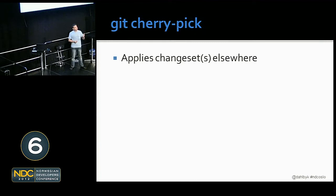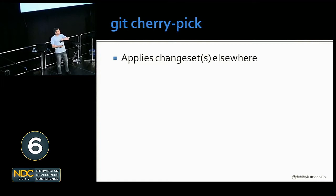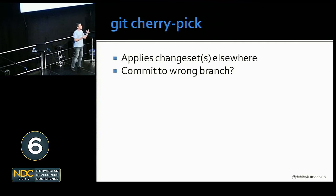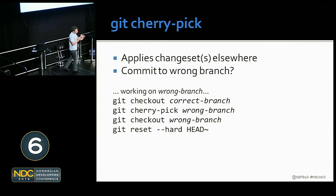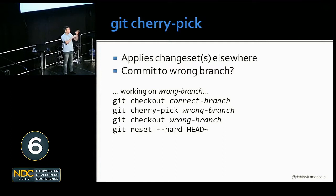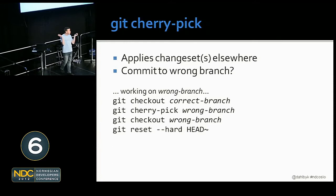Cherry pick — another way to rewrite history. It allows you to apply change sets essentially anywhere. Suppose you committed to the wrong branch. Switch yourself to the correct branch and do a cherry pick of the commit on the wrong branch. If you didn't notice until two commits in, cherry pick `wrong-branch~` and then `wrong-branch` to grab both commits into your current branch. Then switch back to wrong-branch and use reset to go back before the erroneous commits. Done.